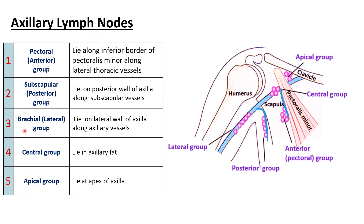Third is the brachial or lateral group, located in the lateral wall of the axilla and associated with the axillary vein. Then we have the central group, located in the center — the base of the axilla — in the axillary fat. And last is the apical group, present at the apex of the axilla.